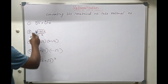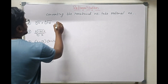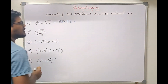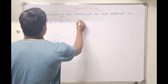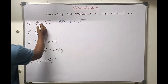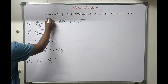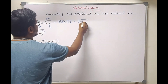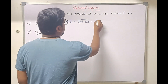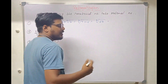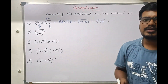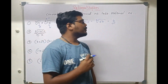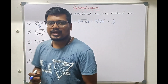The first question is cube root of 4 into cube root of 16. There is one formula: nth root of a into nth root of b. When powers are same, we can multiply the numbers inside the root. Here the a value is 4, the b value is 16, and the n value is 3. So we multiply 4 into 16, giving cube root of 64. Cube root of 64 is 4 because 4 cubed equals 64.